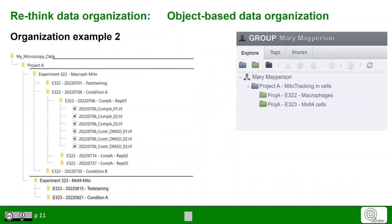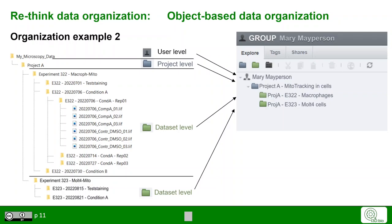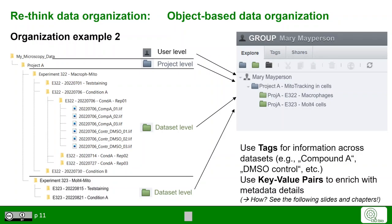A second example would be that we have again the highest level as the user level, and then we put just the project level where we even have a flatter hierarchy by putting in all the parts of an experiment that belong to, for example, macrophages into one dataset, and the same goes for another cell type. Again, we need tags and key-value pairs to annotate additional data. We recommend that tags are used for information across those datasets to substitute for the deep folder hierarchies, and key-value pairs can be used to enrich with metadata details.